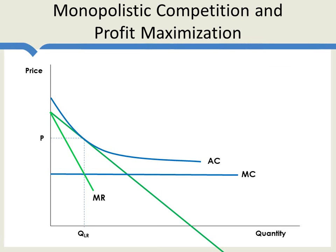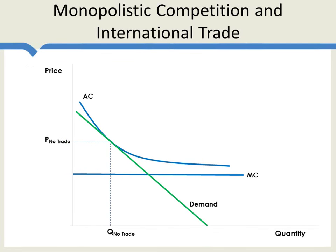Now let's apply this model to international trade. We begin with a representative firm in long-run equilibrium in the home country — profits are zero. Think of this as a Canadian firm. A free trade agreement with the United States has just been implemented. There are two effects. First, the firm faces much more competition as U.S. firms can now compete in its market. At the same time, the firm realizes it now has access to a much larger market. By setting a lower price, the potential increase in quantity demanded has gone up — it can now sell to a much larger audience.